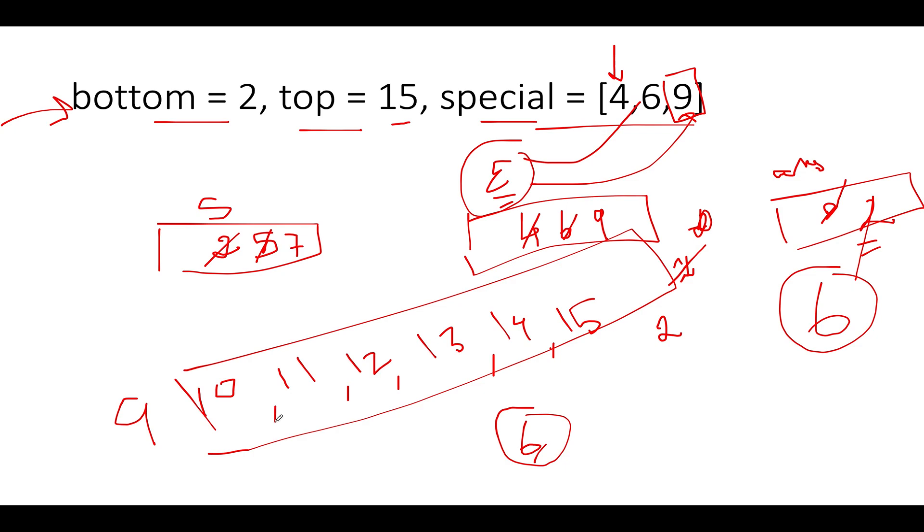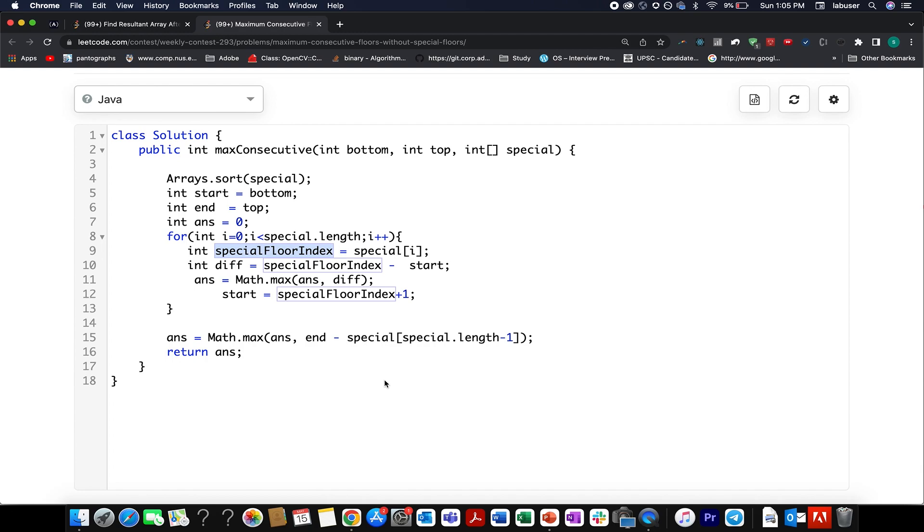The first thing that I have done is to sort my special array so that I see all the elements in sorted order. Next, I go ahead and create the start index. The other one is acting as my end index. The last one is acting as my answer variable that will store the answer. I iterate over my special array. I extract the special floor index, which would be special at the ith index.